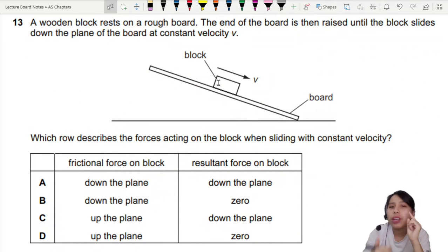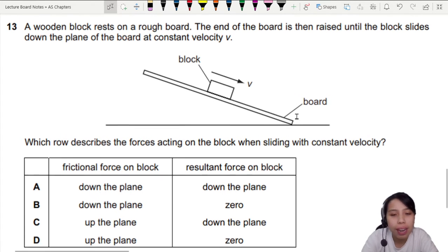A wooden block rests on a rough board. The end of the board is raised until the block slides down the board at constant velocity. This sounds like a lab experiment.